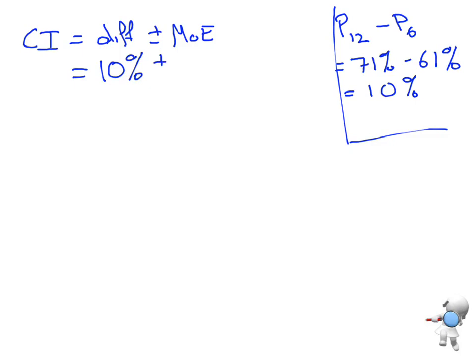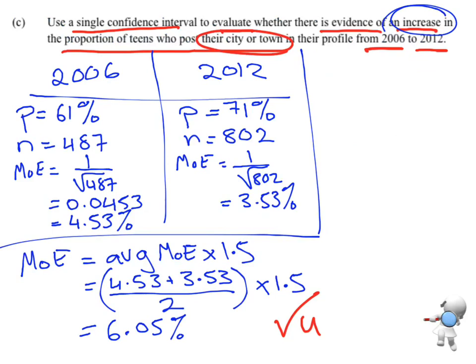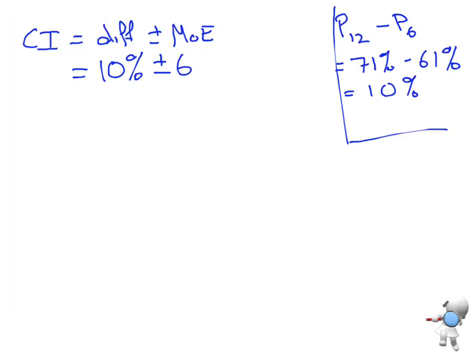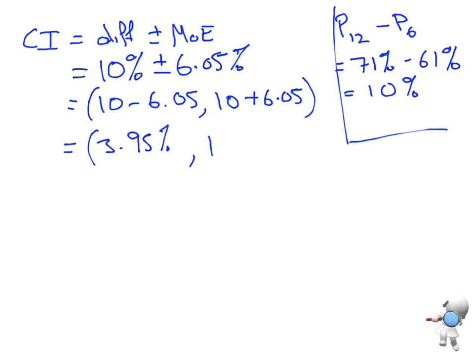So I'm going to do that 10% plus or minus, now my margin of error over there, 6.05%. So I need to do the two parts, 10 minus 6.05, and I always put the smallest number first, and 10 plus 6.05. And that is going to give me 3.95% and 16.05%. So getting that far is good.